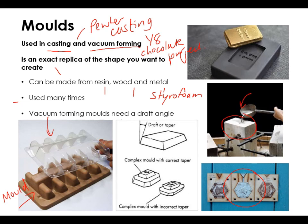For vacuum forming, you need to remember that molds quite often have a draft angle, which means that you can remove the product from the mold after it's been shaped. Molds allow you to produce the same shape over and over, they can be used many times, and that's just another example of a production aid. Short and sweet — I hope that helped, see you on the next video.